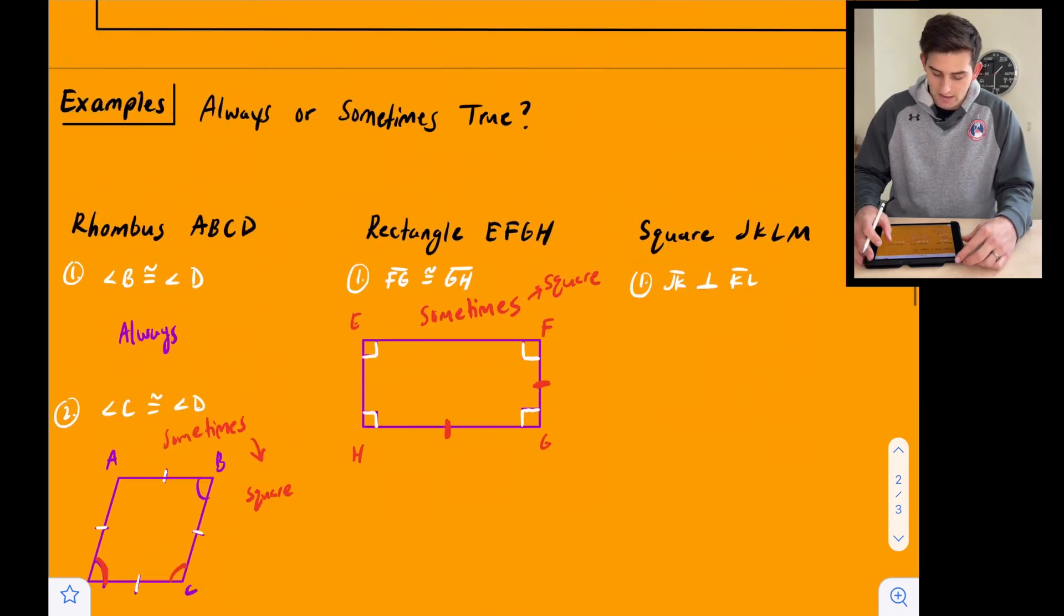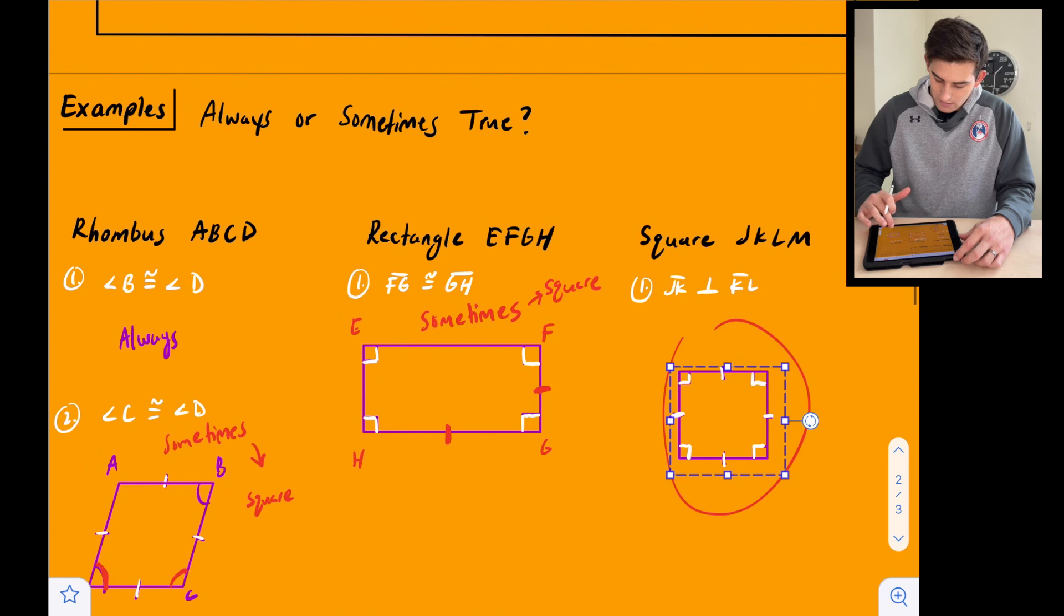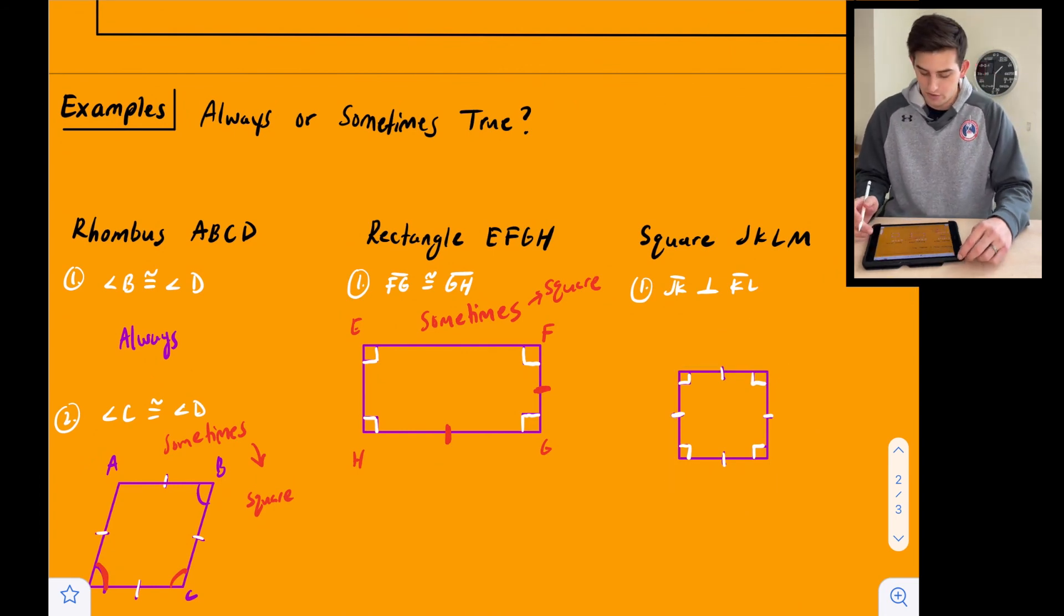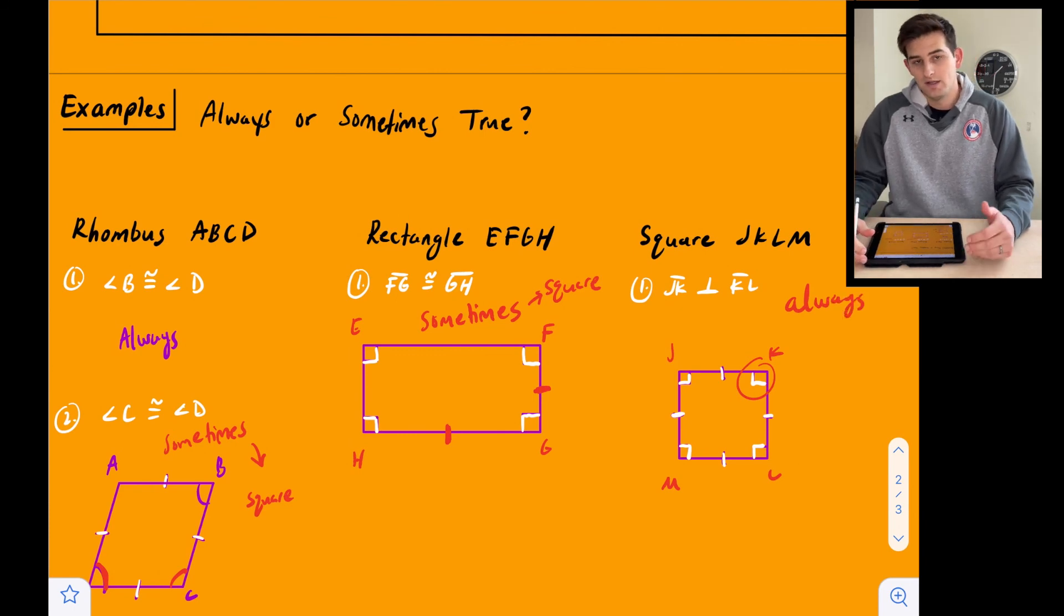And the last one, square JKLM. So now for this one, we know that we are working with this shape right here, a square. And so now we can check to see if this would be always or sometimes true. So it says JK, JKLM. Side JK is going to be perpendicular to side KL. So that would be this right here. And this one, we are going to say always, because for a square, we know it always has four right angles.